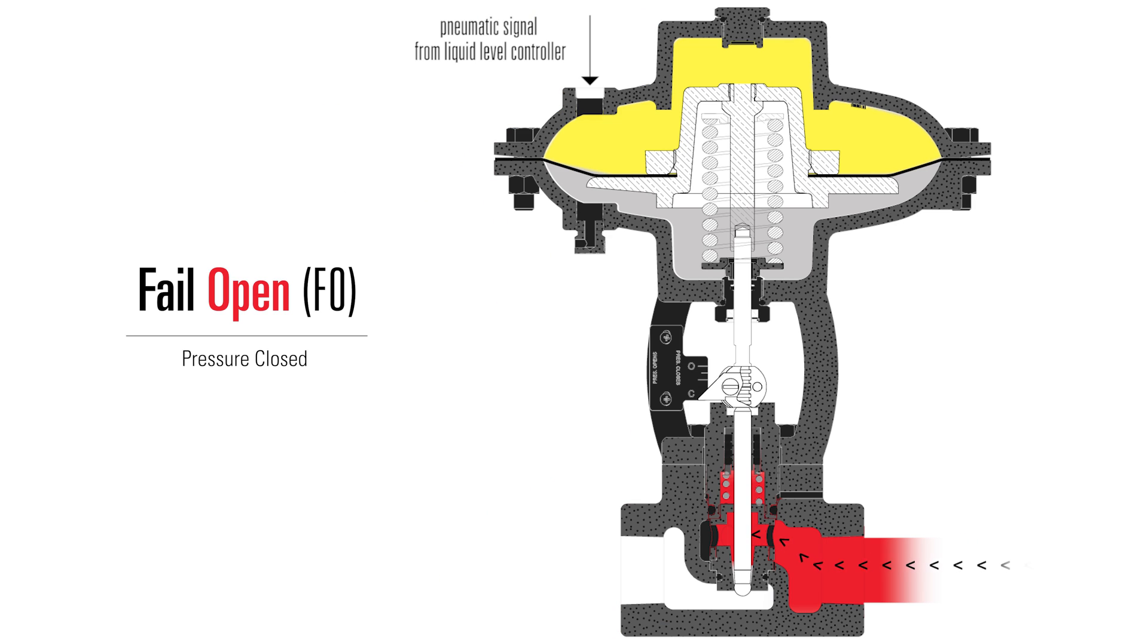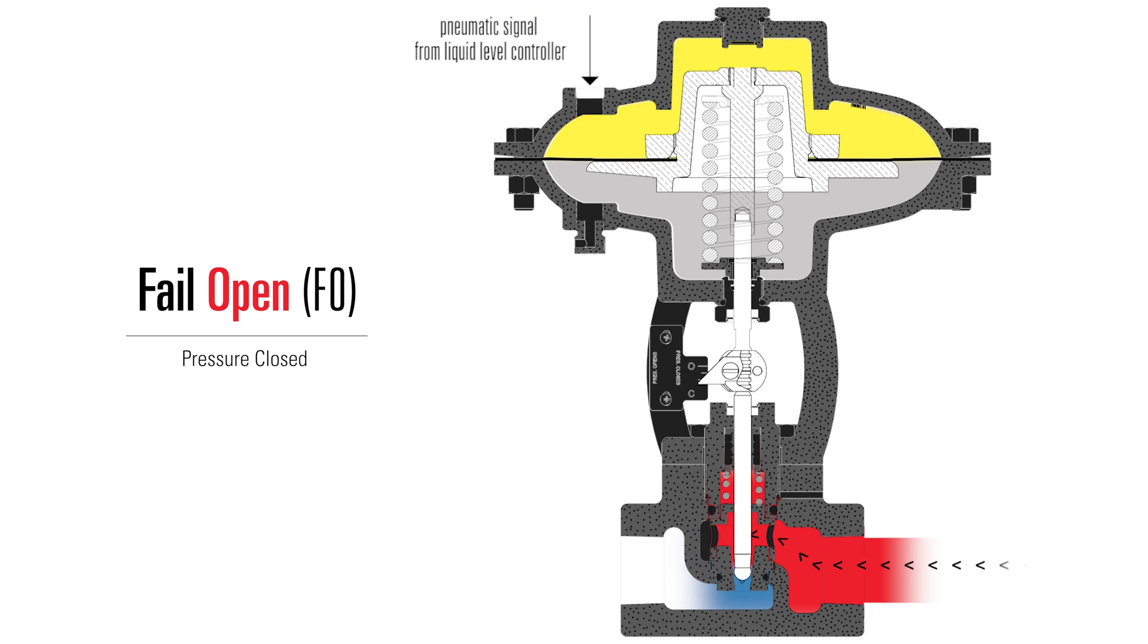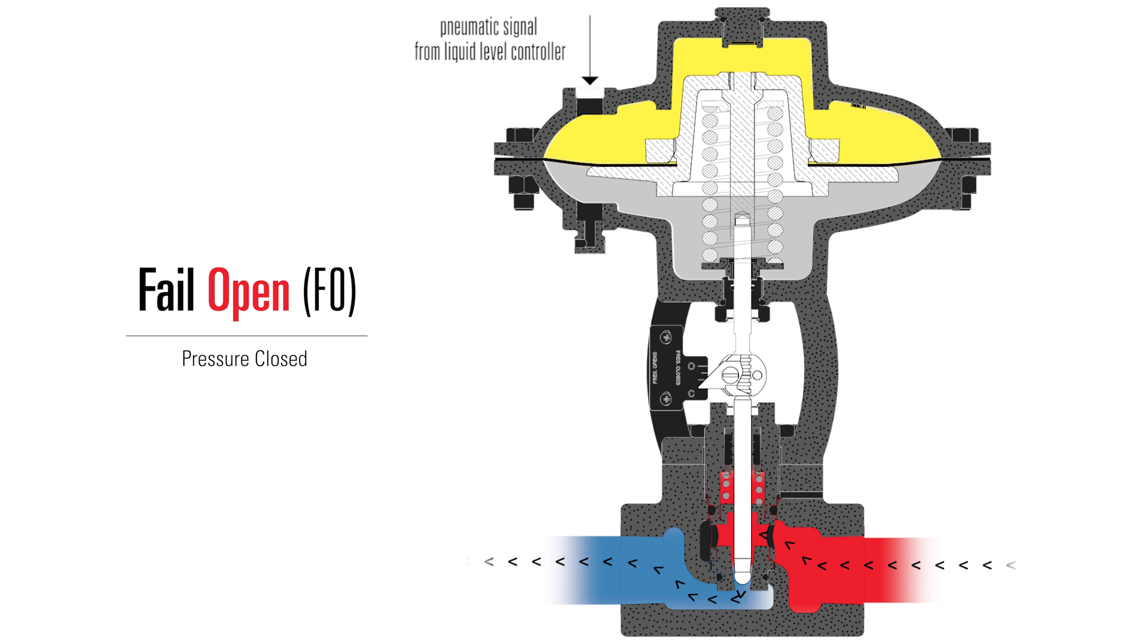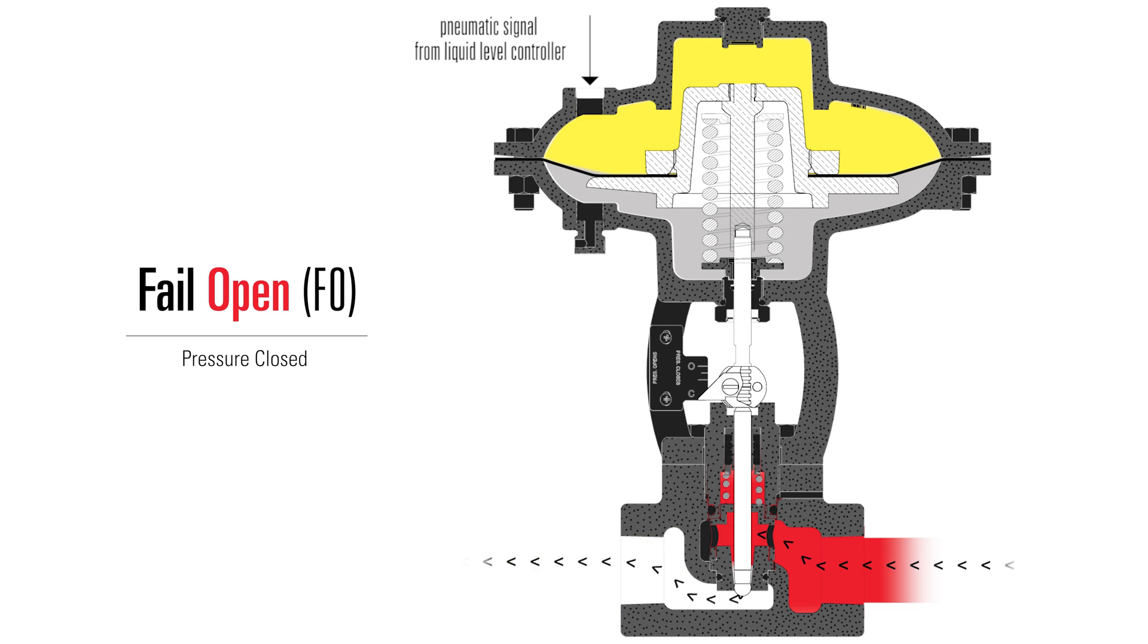Fail open, or pressure closed, means that when there is a loss of signal, the valve opens. If you're using your valve in a back pressure application, such as holding pressure on a separator, you want it to be fail open.